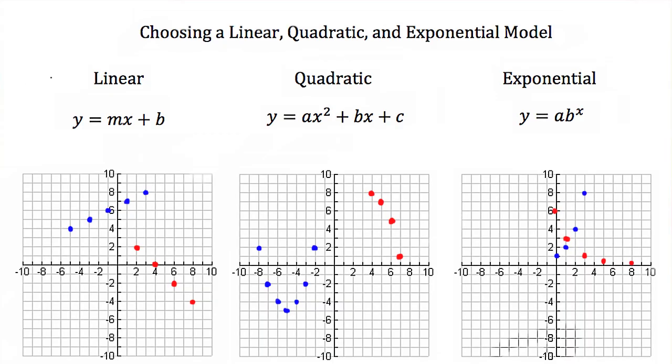Before we can talk about how to choose between a linear, quadratic, and exponential model, we have to remember what those models look like. A linear model has the equation y equals mx plus b. Our x here is to the first power and any points that fit a linear model are always graphed in a straight line, like these blue points or these red ones.